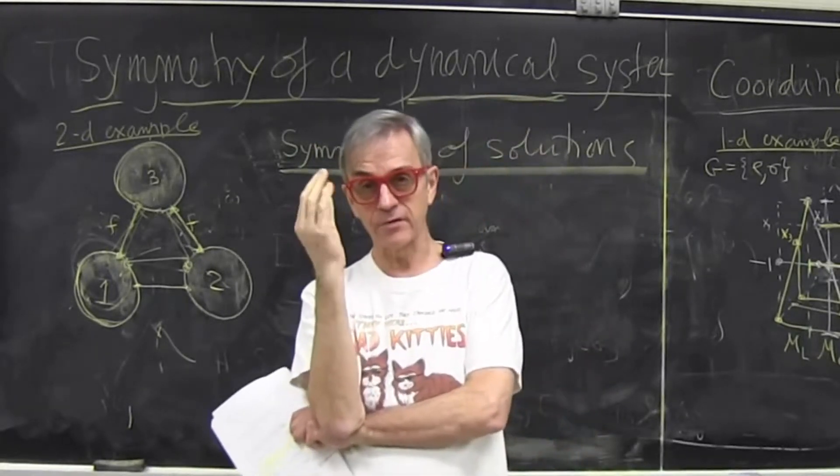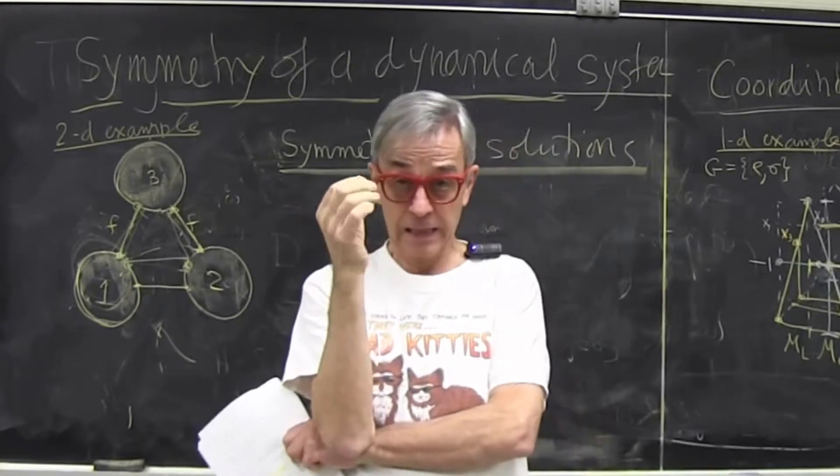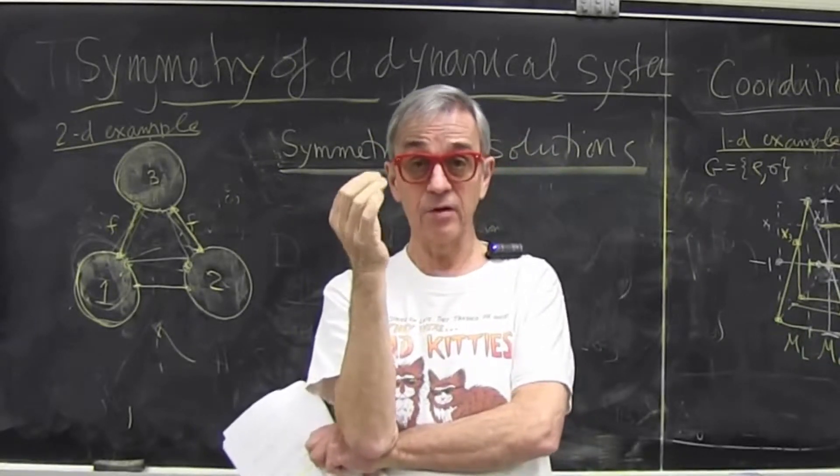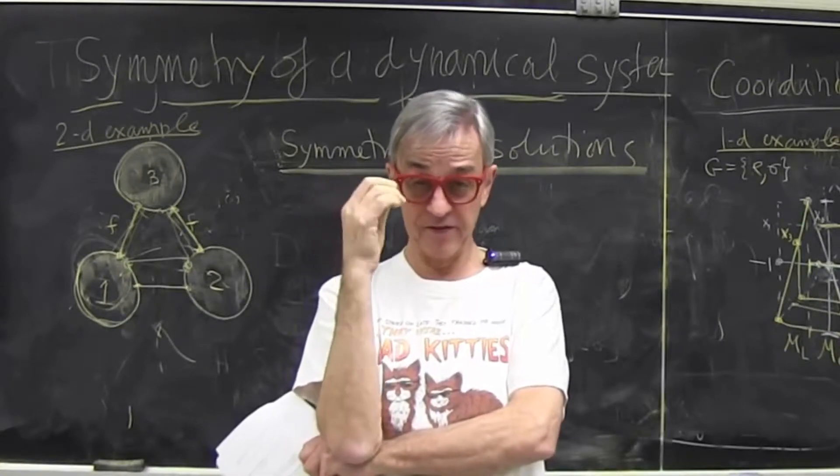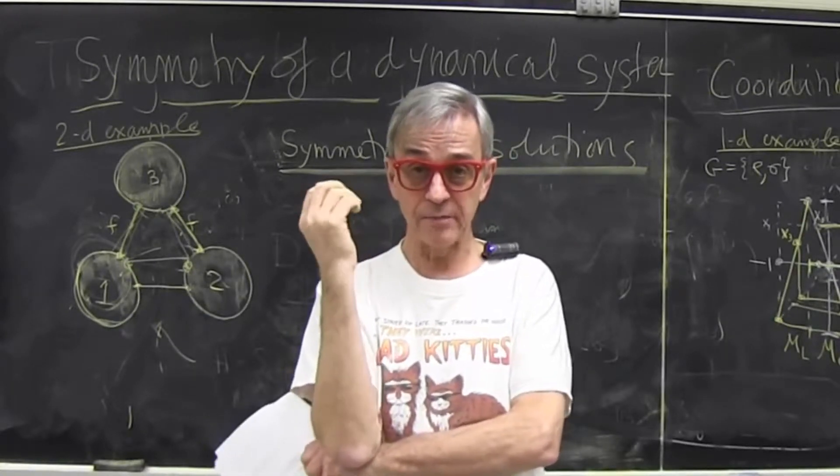So in condensed matter, that's called symmetry breaking. Solutions don't know about the symmetry. So the generic solution of a system with symmetry is fully asymmetric.